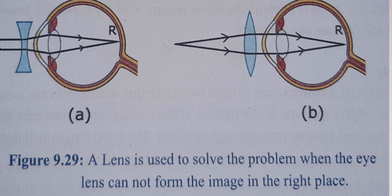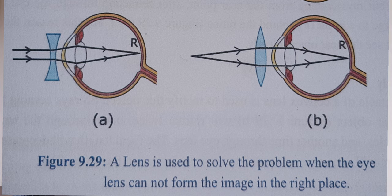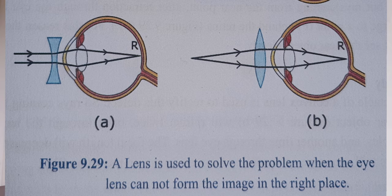If you have a problem, you go to the doctor and the doctor will figure out what kind of lens you need. For myopia — nearsightedness — you use a concave lens. And if you have hypermetropia — farsightedness — the power of convergence of the eye lens decreases or focal length increases, and the radius of the eyeball decreases for some reason. The solution is glasses.